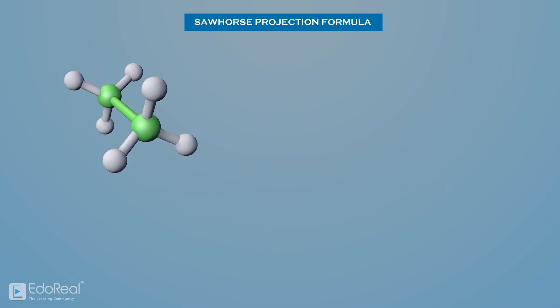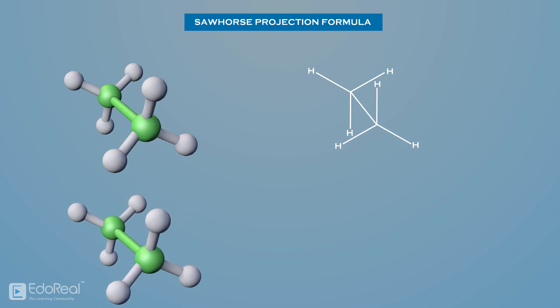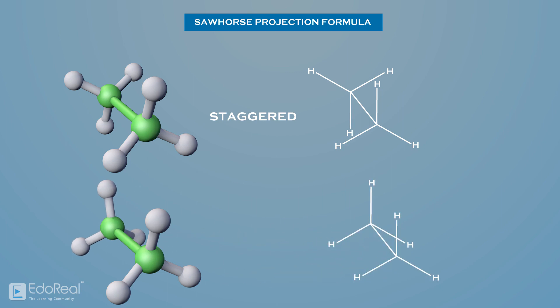To draw a Sawhorse projection, we just need to replace the bonds in the model with straight lines. Sawhorse projections can also be drawn so that the groups on the front carbon are staggered — which means 60 degrees apart — or eclipsed by rotating 60 degrees, which means directly overlapping with the groups on the back carbon. The two Sawhorse projections of ethane, both staggered and eclipsed, can be drawn as follows. These are the simplest Sawhorse projections because they have only two carbons and all of the groups on the front and back carbons are identical.